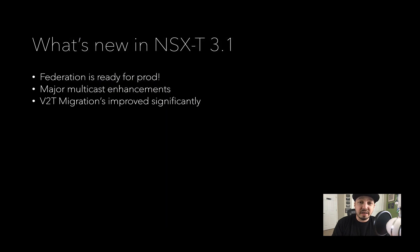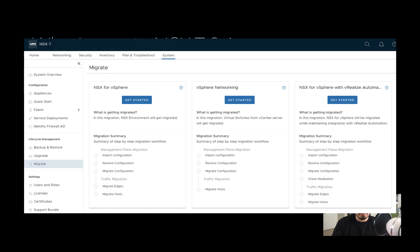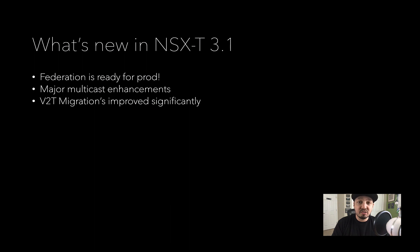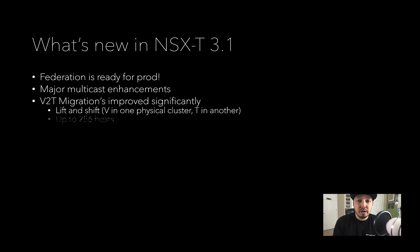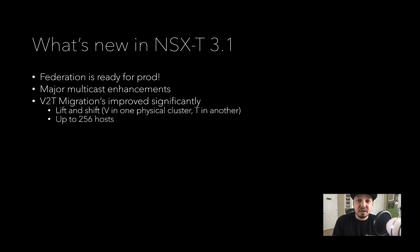The next thing I want to talk about is V2T migrations — they have gotten a lot better. NSX-T actually has a built-in migration tool called Migration Coordinator that's in the GUI itself. One of the cool things is this will actually migrate not only in place, but now as of 3.1 it can actually do lift and shift migration. So you could have your NSX-V install over here, your NSX-T cluster over here, and actually lift and shift with this Migration Coordinator tool. The scale has also been increased — you can now support up to 256 hosts for migration.